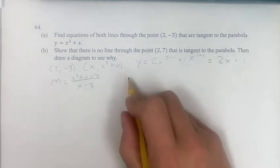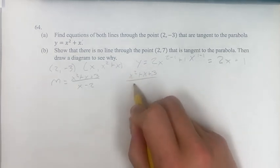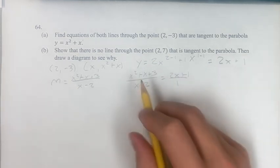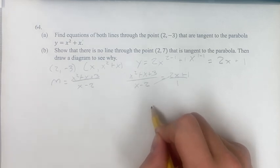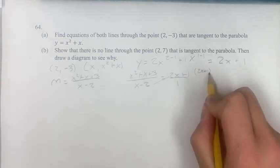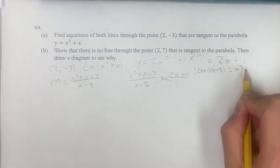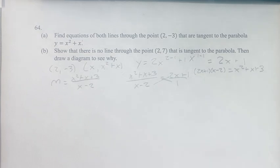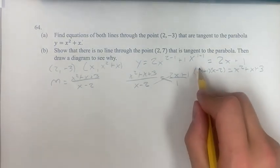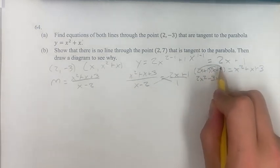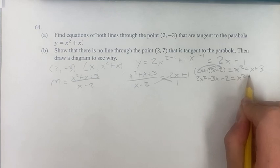So x squared plus x plus 3 over x minus 2 is equal to 2x plus 1. We put it over 1 so we can cross-multiply: 2x plus 1 times x minus 2 equals 1 times x squared plus x plus 3. Foiling out, we get 2x squared minus 3x minus 2 equals x squared plus x plus 3.